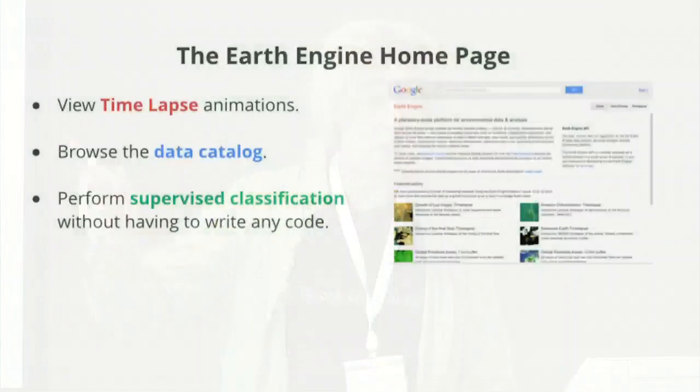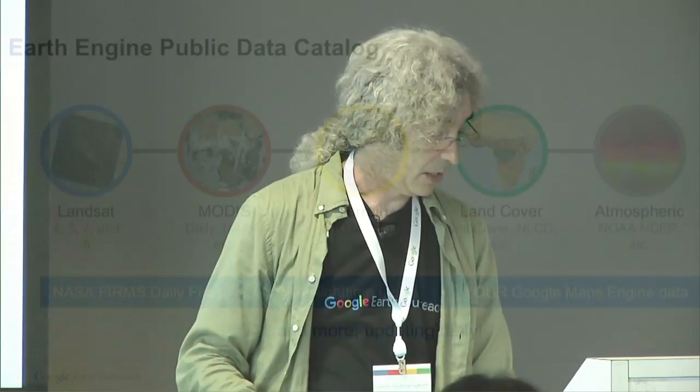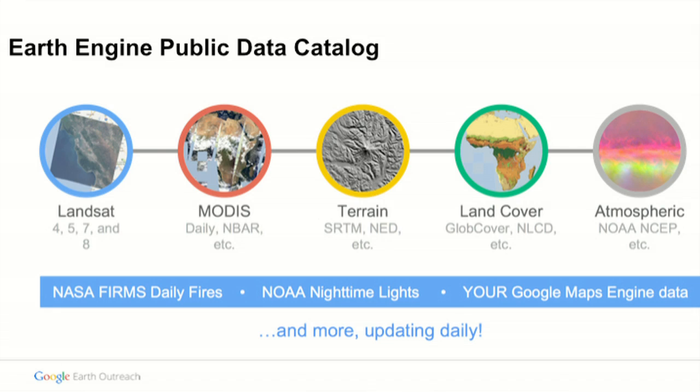Here's how you use it. You can go to the homepage where we have access to the time-lapse videos — you can look at the animated vision of the world. You can browse our data catalog and also do some analyses on the homepage. The data catalog has satellite data, elevation data, atmospheric data, and lots of other information. This is driven by our users — people who want a certain data source, if we're allowed to bring it in and it's generally useful, we'll do that. You can also upload your own vector or imagery data to analyze it.